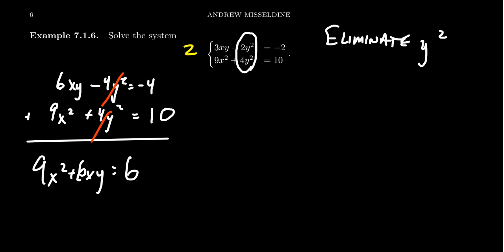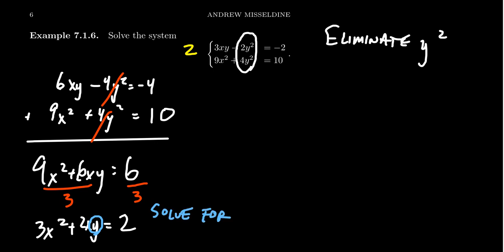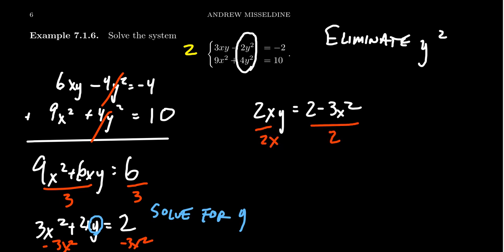I notice that both sides are divisible by 3, so dividing by 3 gives us 3x² plus 2xy equals 2 — we like smaller coefficients when possible. We still have x and y together, but there's just a single y, so I can solve for y. Subtracting 3x² from both sides gives 2xy equals 2 minus 3x², then dividing both sides by 2x gives y equals (2 minus 3x²) over 2x.